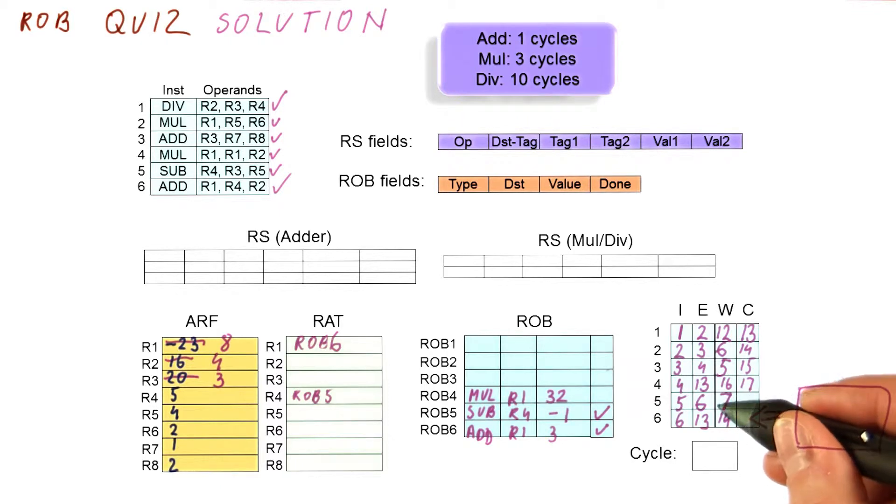Next cycle 18, we will check if this can commit. Yes, it can because it has already broadcasted its result and is done.